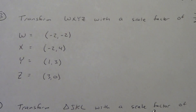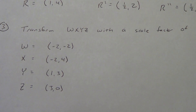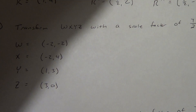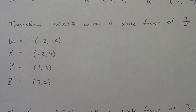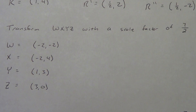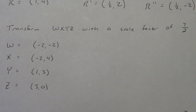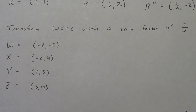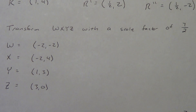Let's move on to example number three. We're going to transform quadrilateral WXYZ with a scale factor of seven over two. Go ahead and get these four points copied down on your paper and graph them. Quick warning: make sure you've got plenty of room on your graph paper for this one. A scale factor of seven over two is like three and a half — it's going to get pretty big. Don't try to squeeze it into a tiny section of your graph paper.